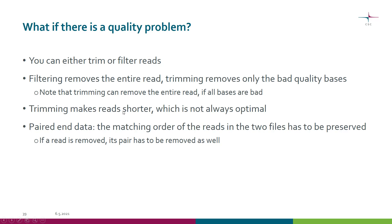It's a fact of life that trimming makes reads shorter, so we need to keep this in mind since we typically want long reads and shouldn't trim too heavily. If we have paired-end data — R1 and R2 files — we need to preserve the matching order of reads in the two files. This means that if filtering or trimming removes a read from the R1 file, its pair must also be removed from the R2 file, even if it would otherwise be a good read.